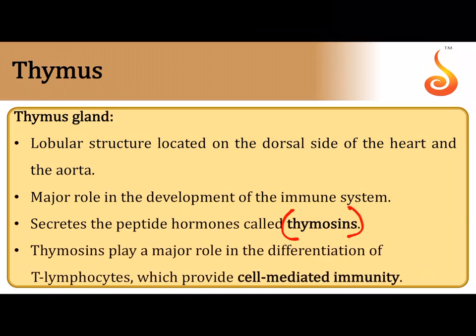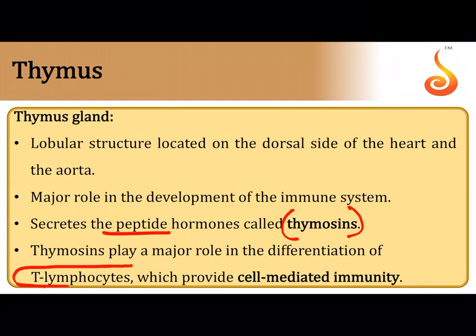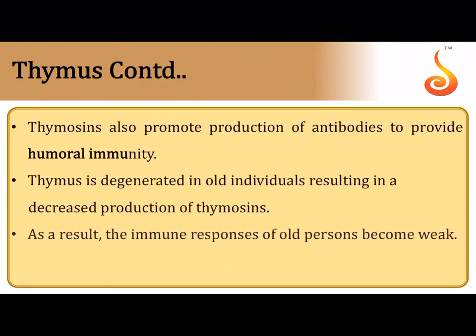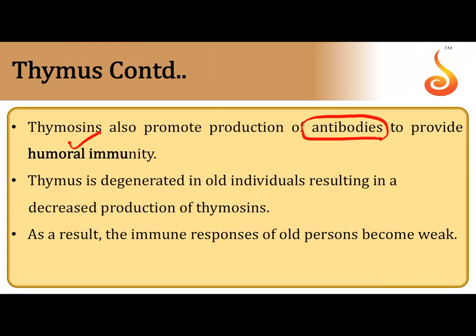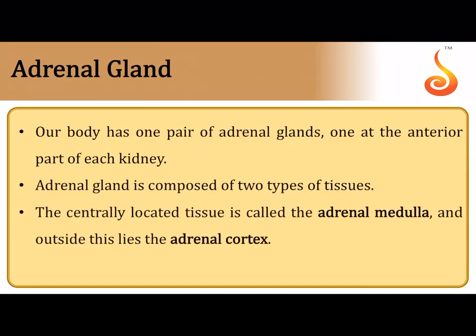The thymus gland is situated above the heart just below the breastbone. It produces a peptide hormone called thymosin, which plays an important role in caring for T lymphocytes and helping them perform their function in cell-mediated immunity. Thymosin also helps regulate humoral immunity, which involves antibodies circulating in body fluids like plasma and mucus lining the respiratory and urogenital tracts. As people grow older the thymus degenerates, causing immune responses to decline.